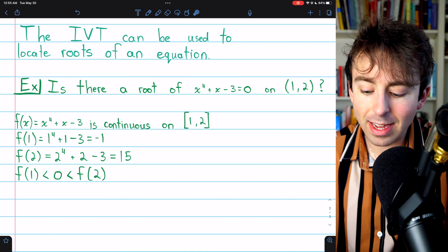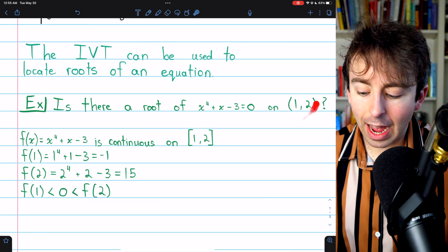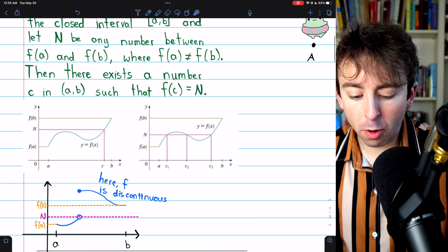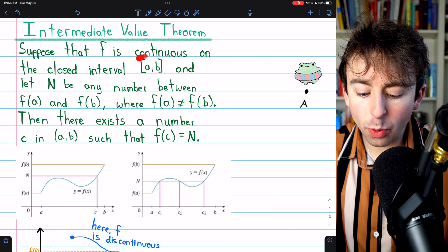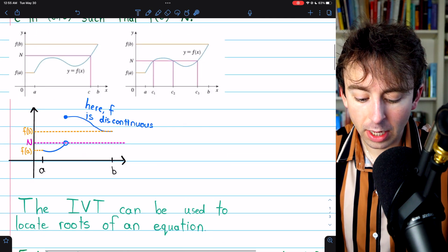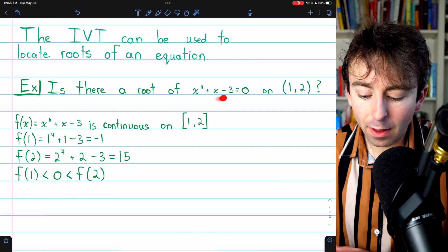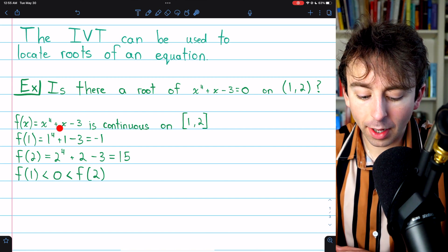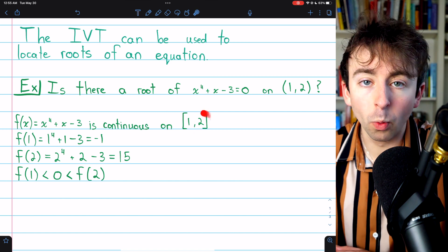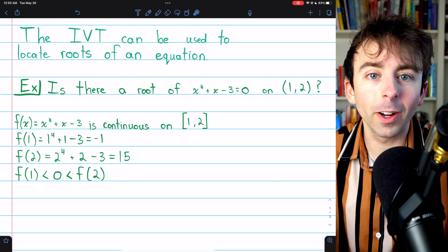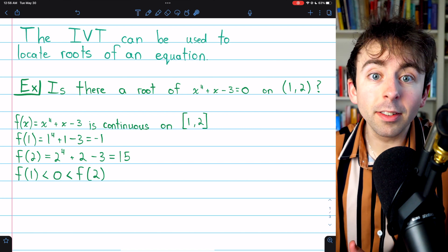This question happens to ask about an open interval, but remember, for the intermediate value theorem to apply, we need our function to be continuous on a closed interval. So we want to be thinking about the closed interval [1,2]. And indeed, the function x^4 + x - 3 is continuous on the closed interval [1,2]. It's a polynomial, and polynomials are continuous everywhere. So the intermediate value theorem does apply.